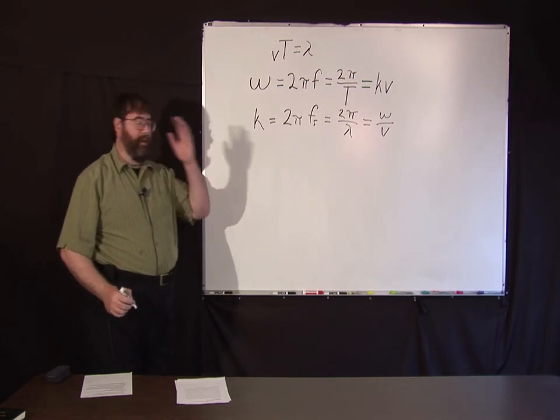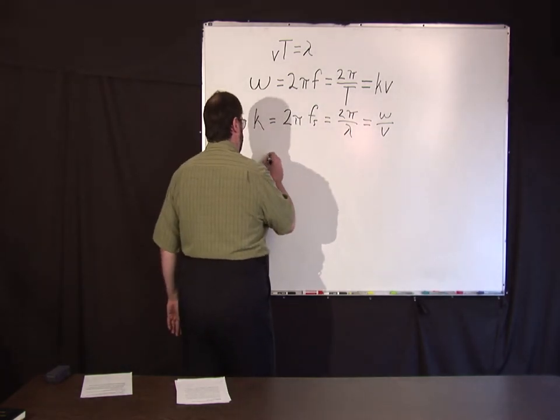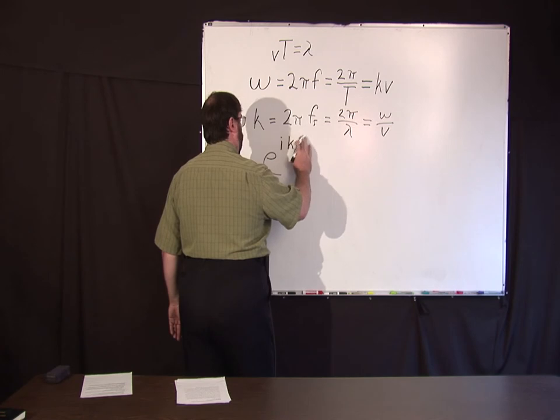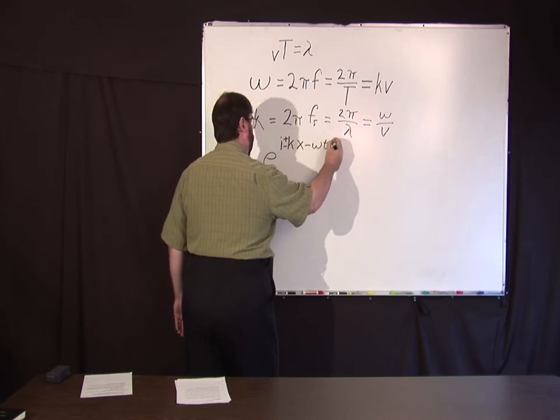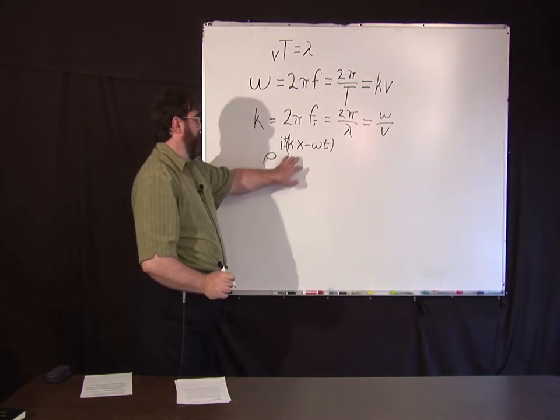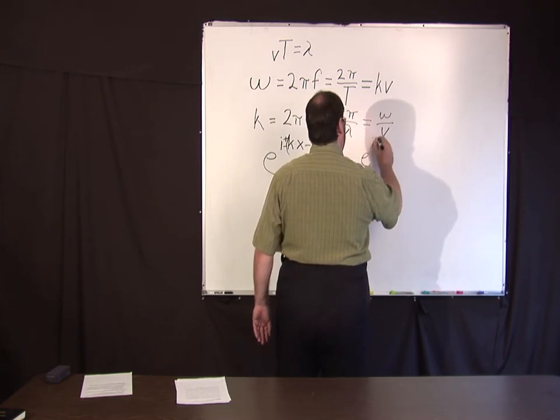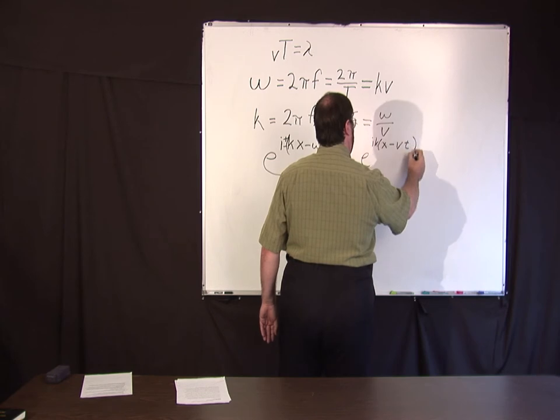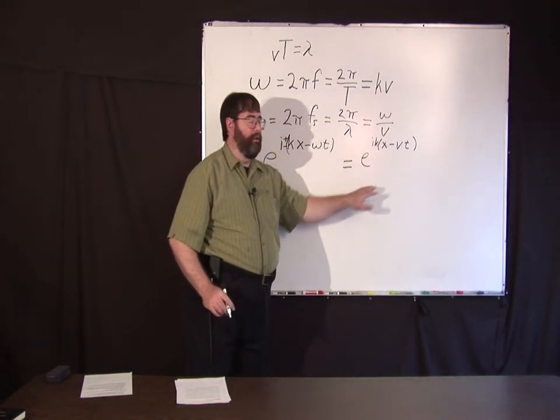That's the relationship between omega, k, and all the other parameters for traveling waves. A general sinusoid in one dimension looks like e to the i(kx minus omega t). From that you can rearrange this and this is also equal to e to the ik(x minus vt) or plus, so this does look like a wave traveling forward or backwards.